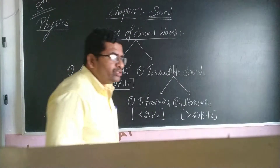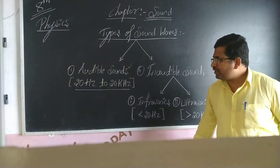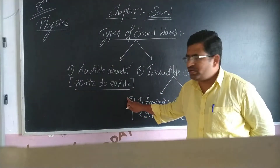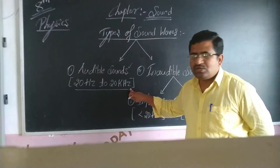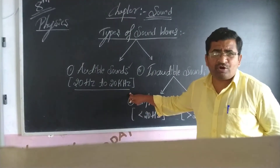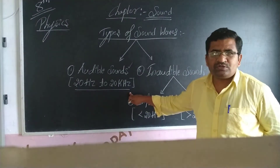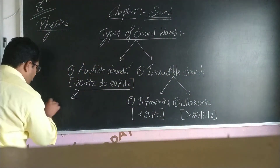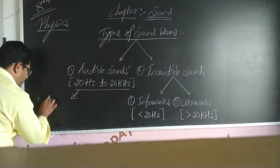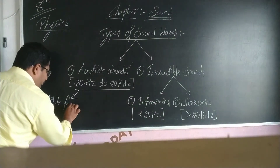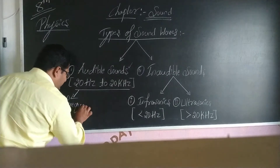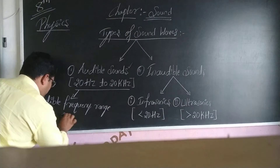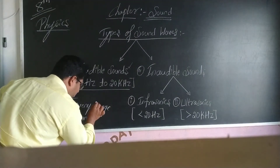The frequency range that starts from 20 hertz to 20 kilohertz, or 20,000 hertz, is called the audible frequency range of sounds.